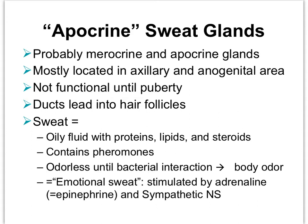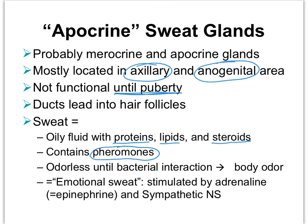Where do we find these sweat glands? These are mostly located in our axillary region — that is our armpit region — and also around the anus and the genital areas. These are sweat glands that do not kick in until puberty, so they require hormones to activate. These apocrine sweat glands are often associated with hair follicles. This kind of sweat is slightly different — it's more of an oily type of fluid, not quite as watery as eccrine sweat, and it contains proteins, lipids, steroids, and even some pheromones, which animals use for sexual attraction and arousal.